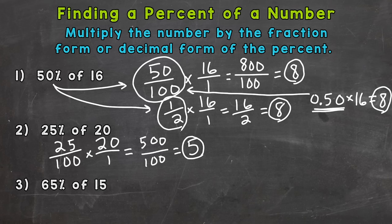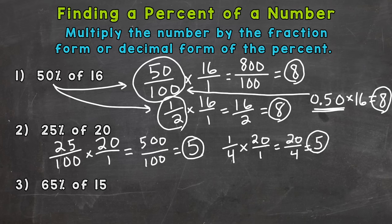We can also use the simplified fraction of 25 hundredths, which is one-fourth. So one-fourth times 20 gives us 20 over 4, which is the same answer: 5. And the decimal form of 25 percent is 0.25 times 20 — punching that into a calculator or doing it by hand gives the same answer of 5.